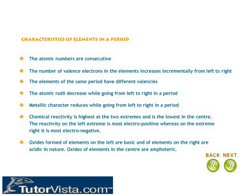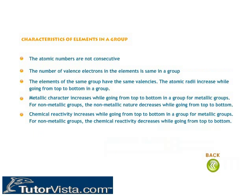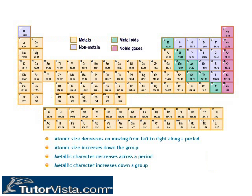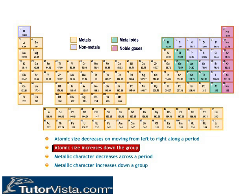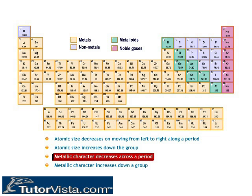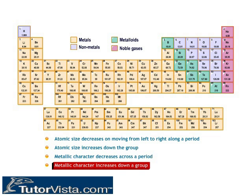The general characteristics of periods and groups are covered here. Trends in the Modern Periodic Table: atomic size decreases on moving from left to right across a period, and increases down the group. Metallic character decreases across a period and increases down a group.